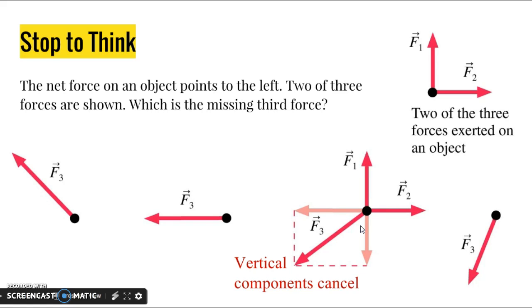When it comes to the horizontal direction, we want the vector component pointing to the left to be longer than the component pointing to the right. If we look at the lengths of F2 here and the horizontal component of F3, we'll see that this component here is a little bit longer than this one, which means that we'll have a leftover force that's pointing straight to the left, and that's going to be our net force.